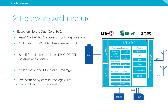Moving on to the hardware architecture. The NRF 9160 SIP is based on a Nordic dual-core SoC. We have an ARM Cortex-M33 processor for the application with 1 megabyte of flash with cache and 256 kilobytes of RAM. We also have a multiband LTE-M / narrowband IoT modem with GNSS — supporting GPS and QZSS as of right now.